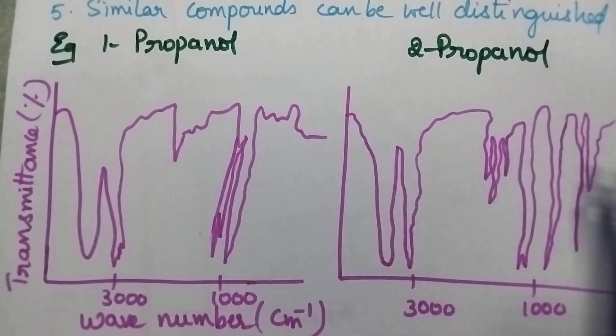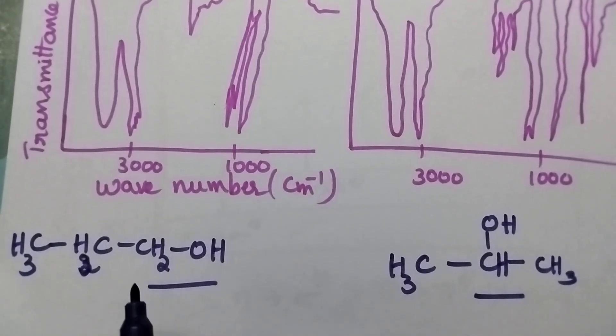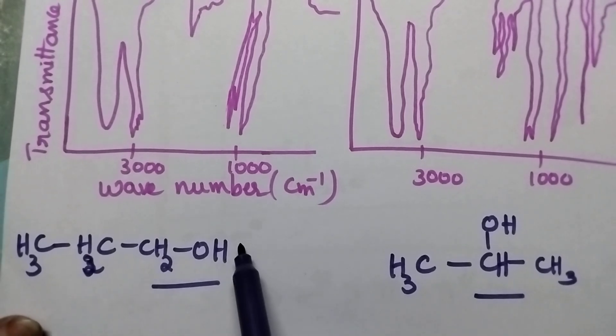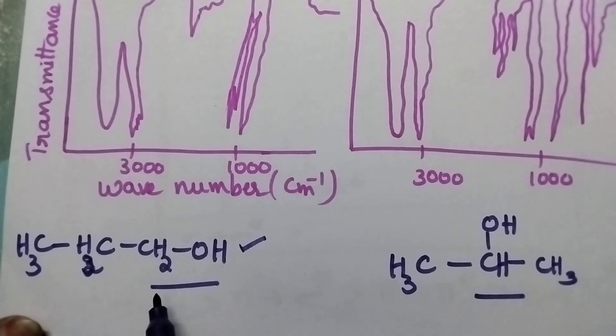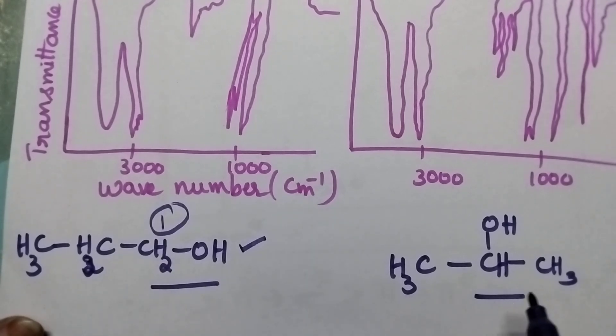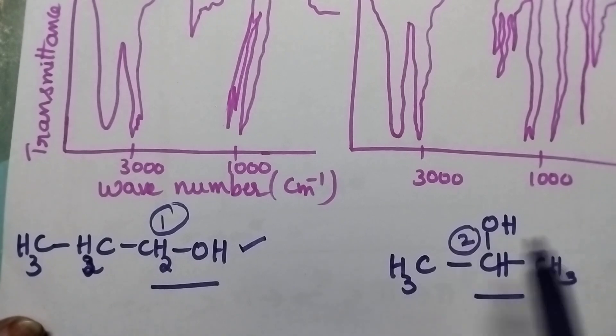1-propanol and 2-propanol are functional isomers. They will have the same molecular formula but differ only in the nature of attachment of the functional group. In the first compound, the OH group is attached to the first carbon atom, whereas in the second compound it is attached to the second carbon. It is the only difference.